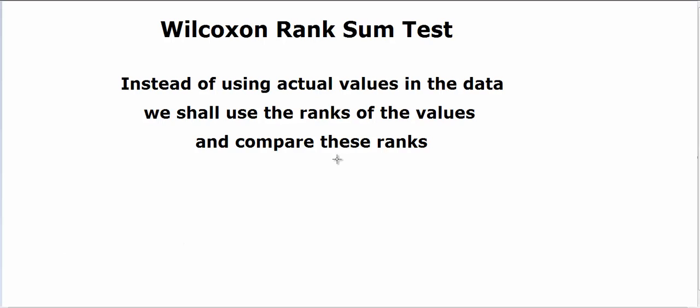So the scheme here will be this, that instead of using the actual values in the determination of p-value, we will use the ranks of the values, just like when you found the median. You did not do any calculation with the values. You just rank the values in the order, and the middle one was median.